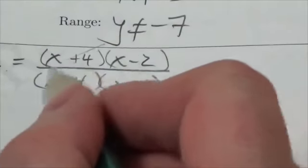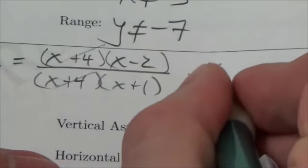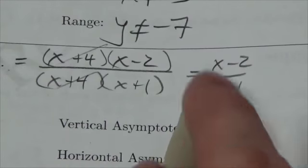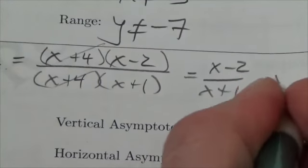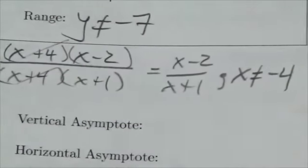Now this is going to be simplified. I can cancel out the x plus 4's and this will reduce to x minus 2 over x plus 1. But those are only truly equal to each other as long as I state the restriction here that x cannot equal negative 4.